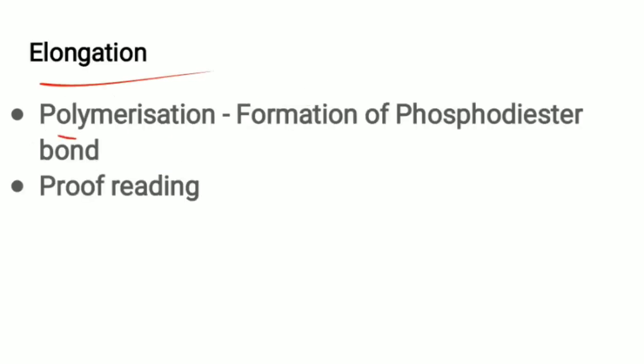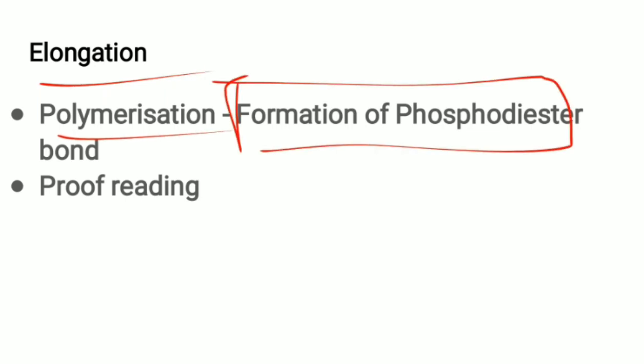Elongation involves polymerization — the formation of phosphodiester bonds between nucleotides. Proofreading activity also occurs, though it is not as efficient as that of DNA replication.